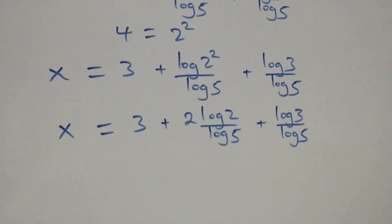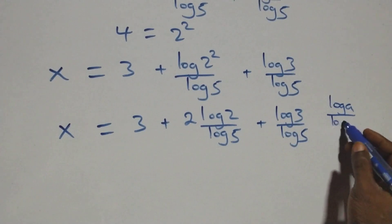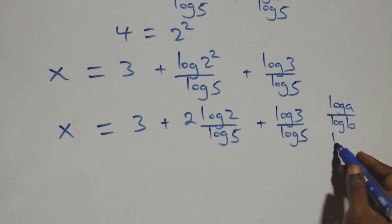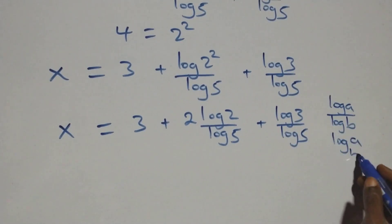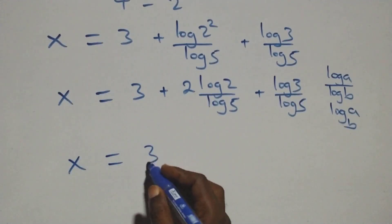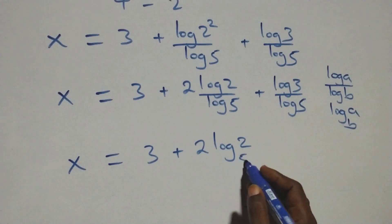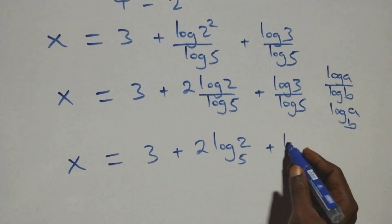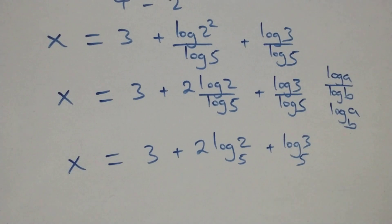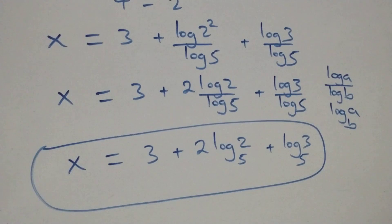We apply the change of base formula, so log 2 over log 5 becomes log base 5 of 2, and log 3 over log 5 becomes log base 5 of 3. Therefore x equals 3 plus 2 log₅2 plus log₅3. Let's check here if this satisfies the given problem — that is, we substitute the value of x back into the equation.